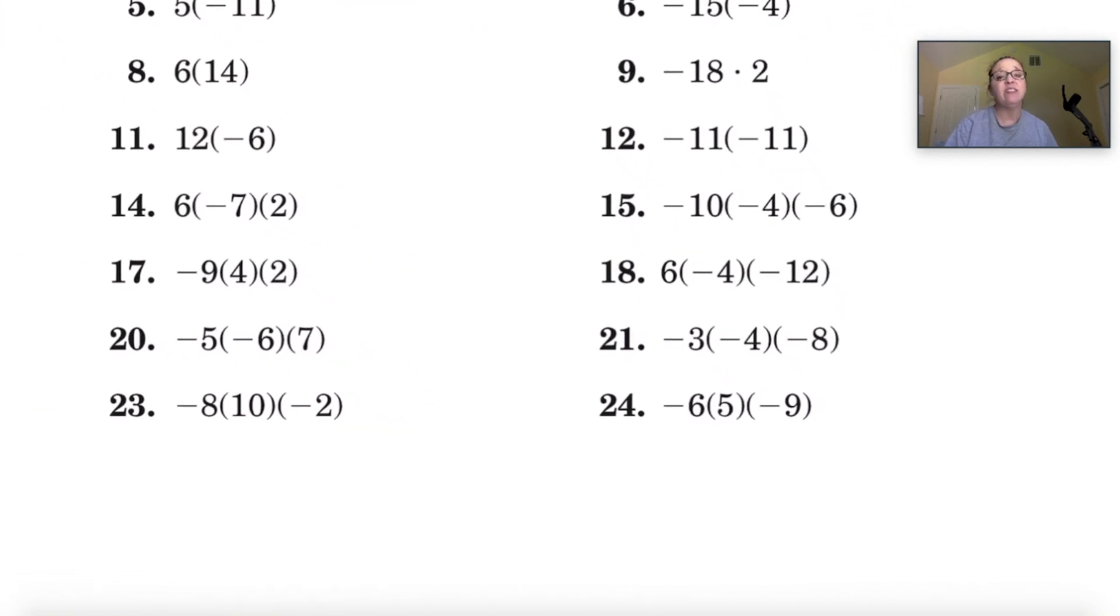For number 15 I have negative 10 times negative 4 times negative 6. Take them two at a time. Negative 10 times negative 4 would be positive because they have the same sign, so positive 40. So if I do 40 times negative 6, well 40 times 6 is going to be 240, but they have different signs so this is going to be negative 240.